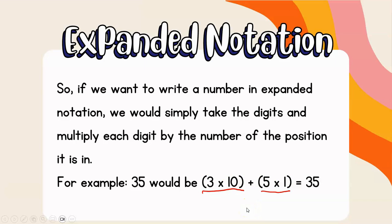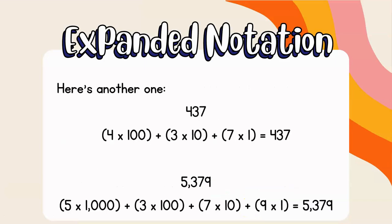Here's another example: we have the number 437. The 4 is in the hundreds place — 4 times 100 — plus the 3 in the tens place — 3 times 10 — plus 7 in the ones place — 7 times 1 — equals 437. You'll notice that we put each multiplication group in parentheses to keep things neat and organized. This is called the distributive property.